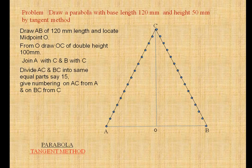You have to give the numbering on AC from A to C, like 1, 2, 3, 4, 5. On BC you have to give numbering from C to B.